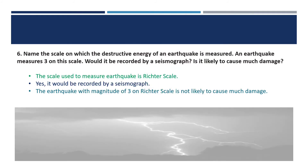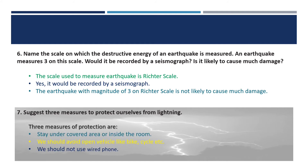The next question is about lightning. Suggest three measures to protect ourselves from lightning. Lightning is a devastating natural phenomenon that can cause disaster. The three measures are: first, stay under a covered area or inside a room, since lightning tends to strike taller or exposed objects.